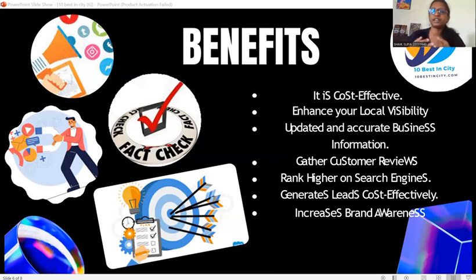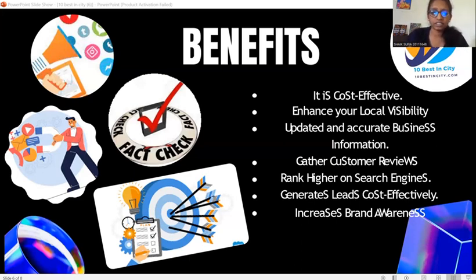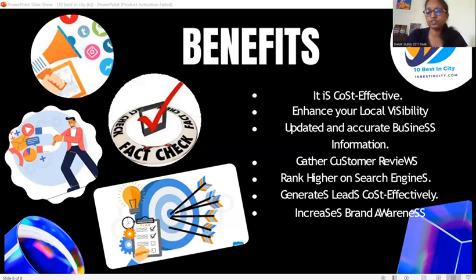Next, we have updated information. As I have already discussed earlier, we have multiple channels to gather information. In this way, we make sure that we have updated and accurate information about the companies that are listed in our blog, so it also helps in gathering customer reviews. Nowadays, to get any information, everyone is using the internet, and listing in this particular blog helps in ranking high on search. It will be more useful for companies who use the pay-per-click concept, which helps in gaining more profit and increasing the sustainability of the company.